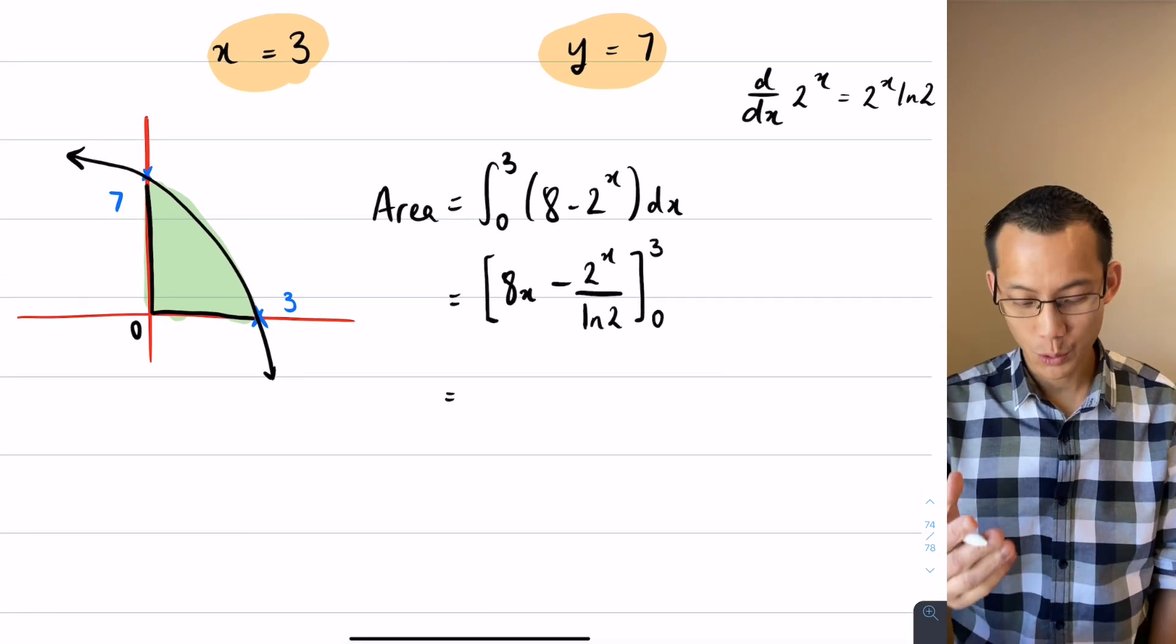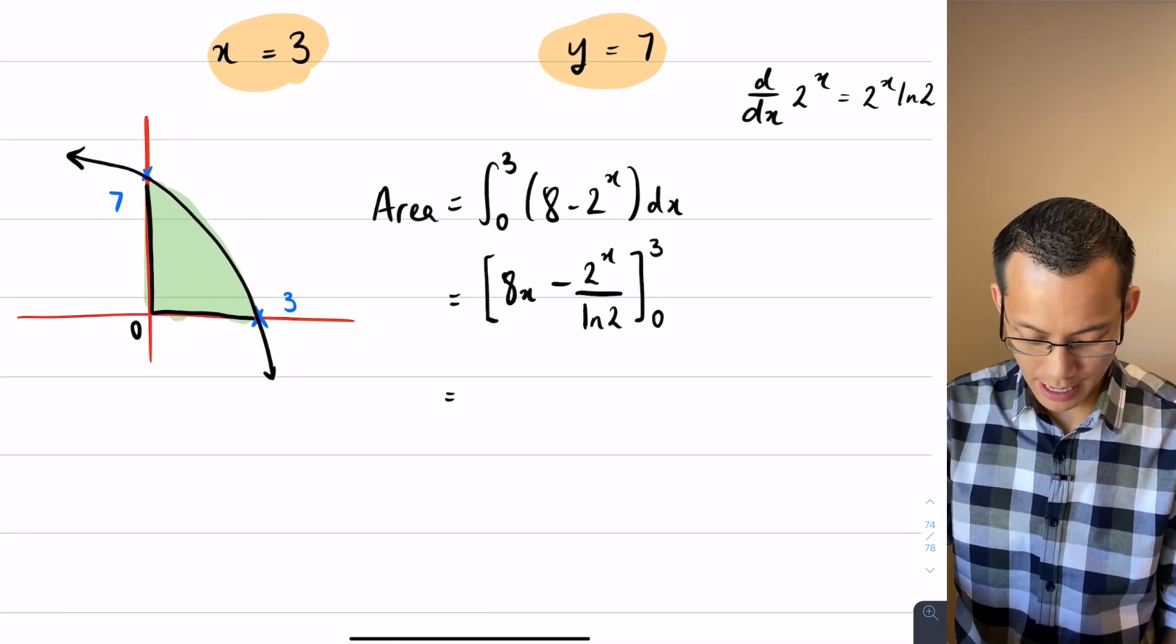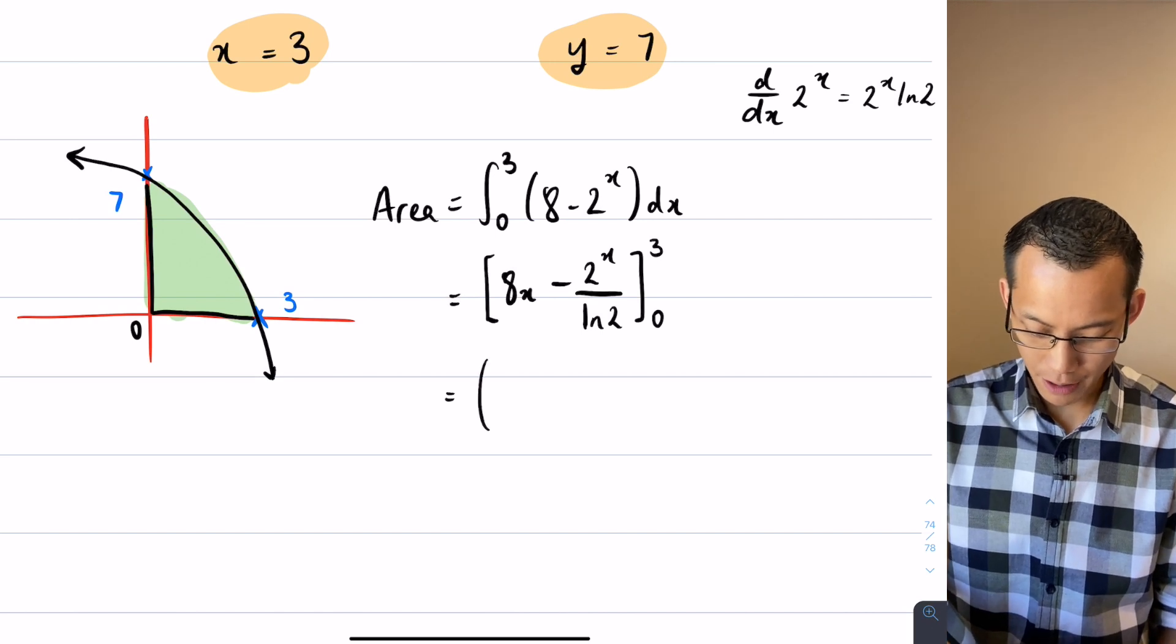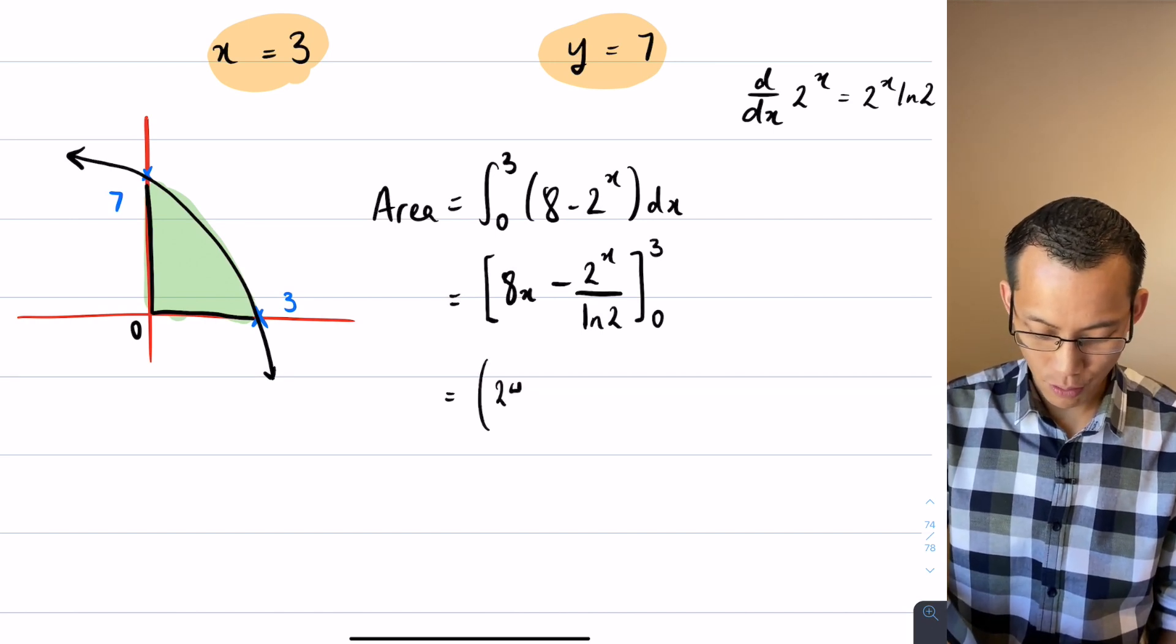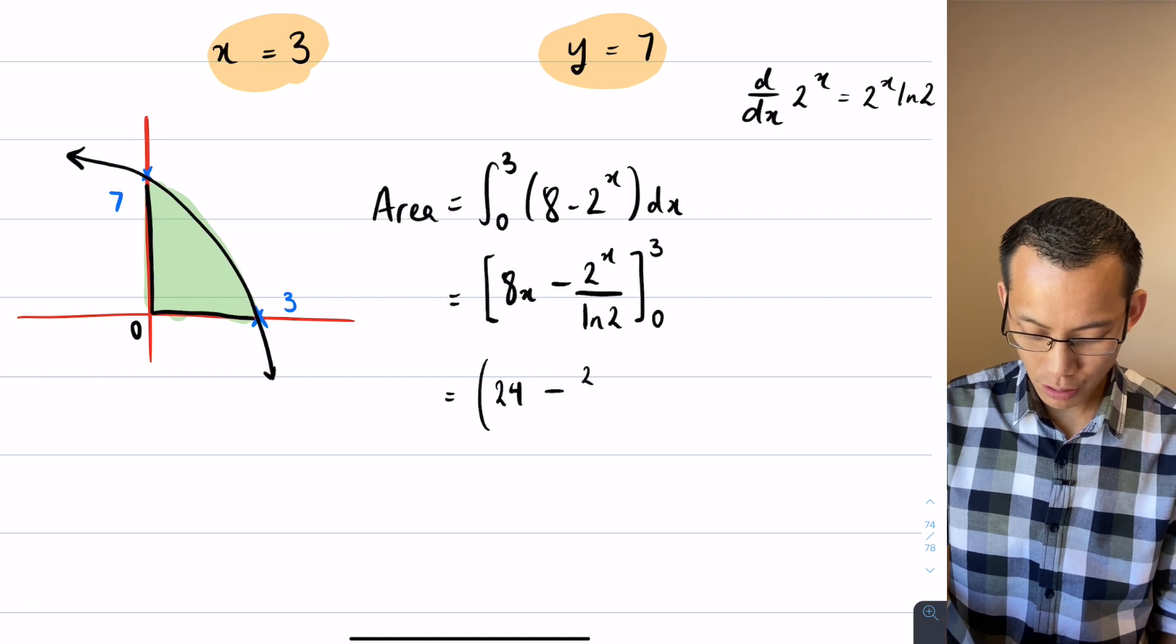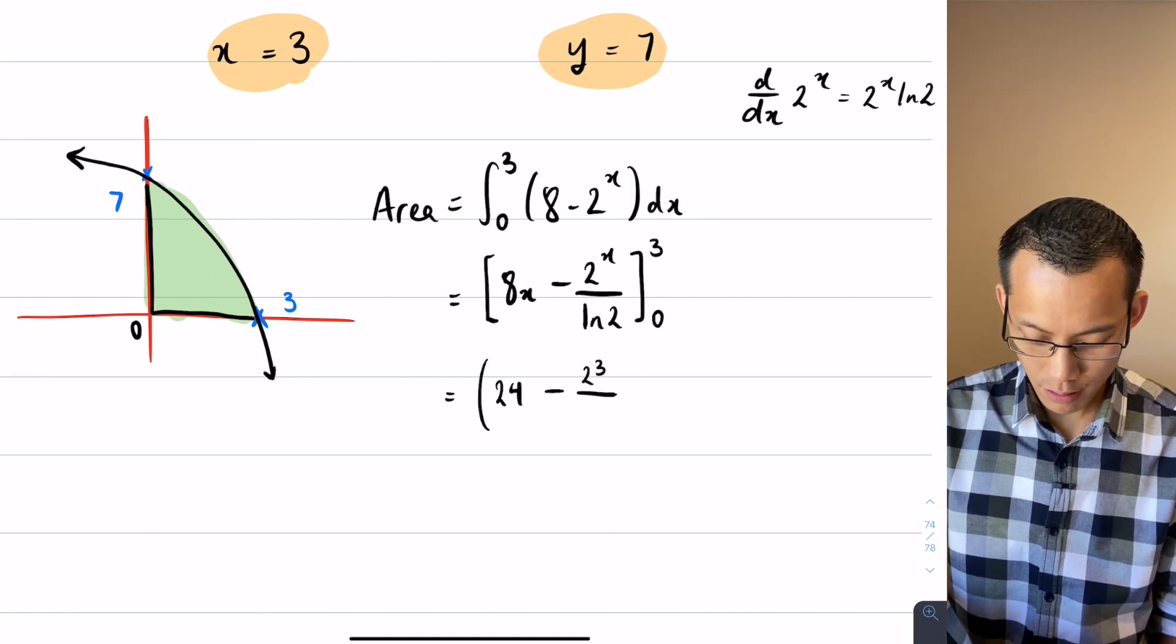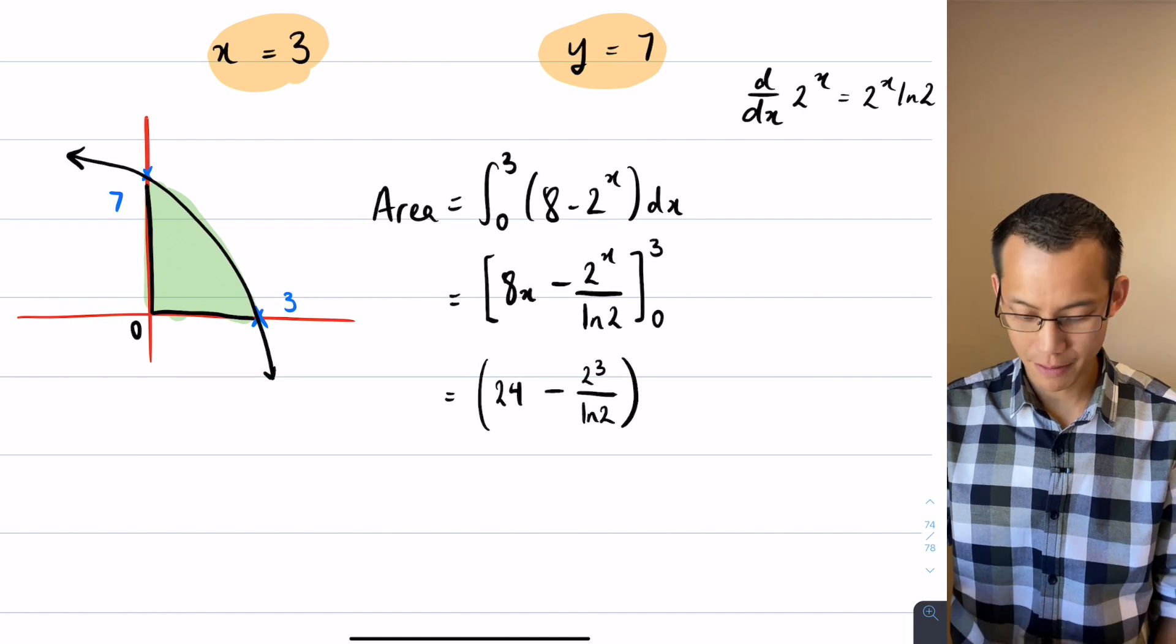So let's see here. We'll do 3 first I guess. So I'm getting the top boundary. 8 times 3 is 24 and then I've got 2 cubed on log 2. There's the top boundary.